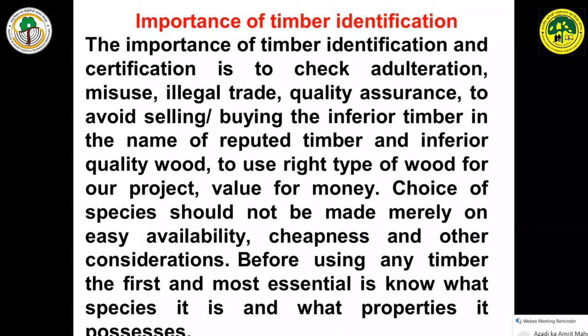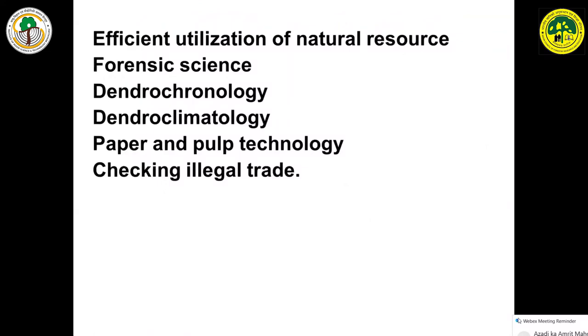We have studied how to identify wood by looking at its vessels, rays, and parenchyma. Fibers won't help in identification — they only provide structural support. The importance of timber identification is to check adulteration, misuse, and illegal trade; for quality assurance to avoid buying inferior timber in the name of reputed timber; and to use the right type of wood for a project. Choice of species should not be based merely on easy availability or cheapness — before using any timber, the first essential is to know what species it is and what properties it possesses.